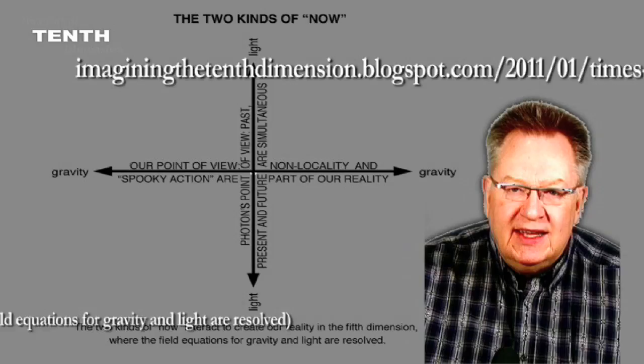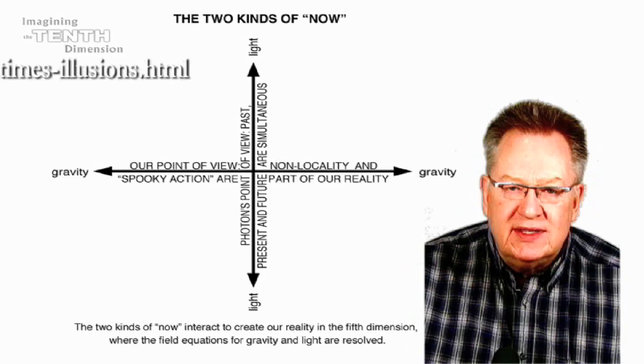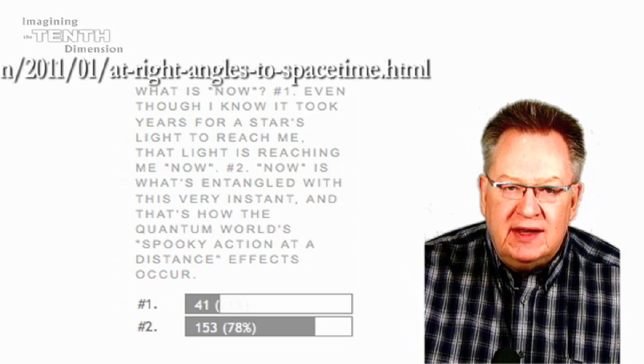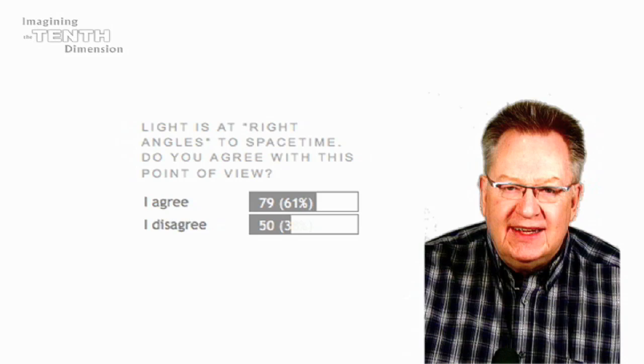In Time's Illusions, we talked about the two kinds of now that are shown in this diagram, and we started a poll question to see which kind of now people think of as applying to our space-time reality. Then, with that Right Angles to Space Time, I started another poll question, asking if people agree with that blog's title as a definition of light.